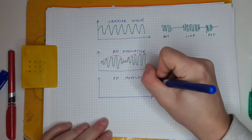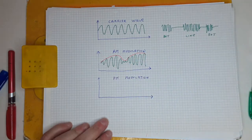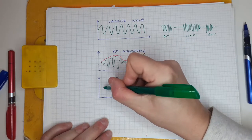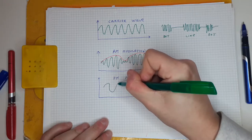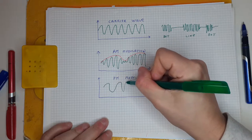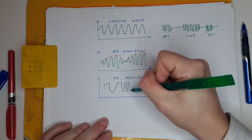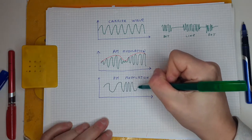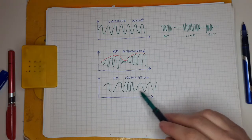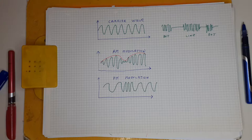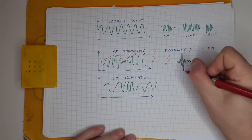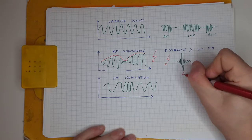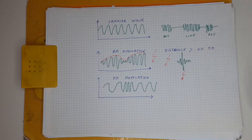Two types of modulation are AM and FM — amplitude modulation and frequency modulation. In AM modulation, the amplitude of the carrier is changed according to the voice signal, while in FM modulation it is the frequency that is changed. AM modulation allows transmission over long distances but is sensitive to atmospheric disturbance, while FM modulation is immune to it.